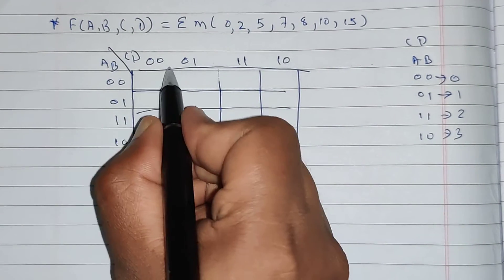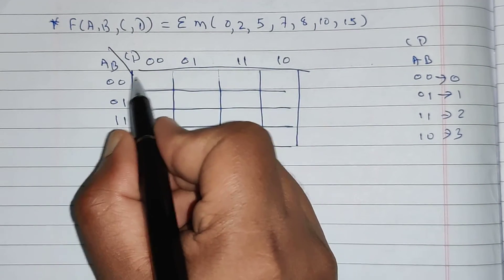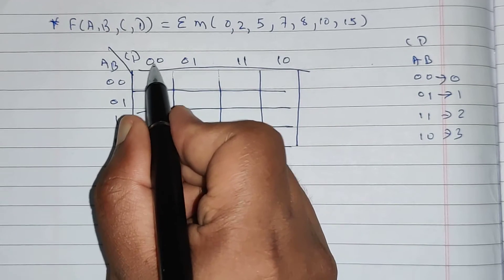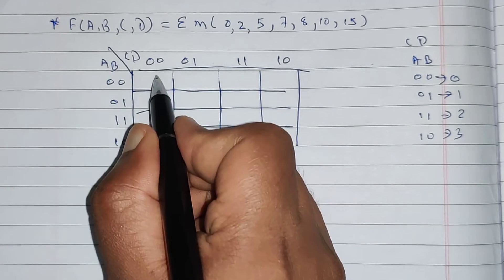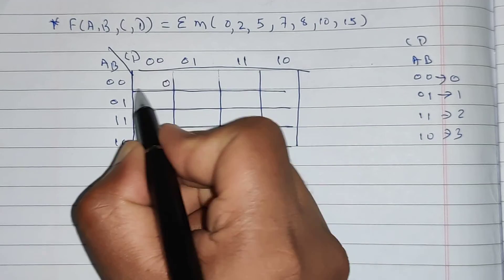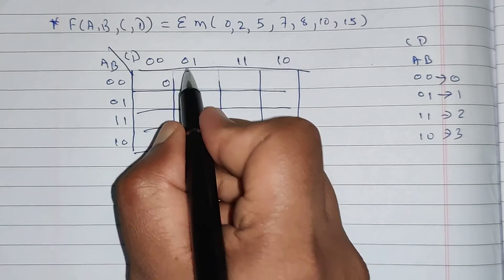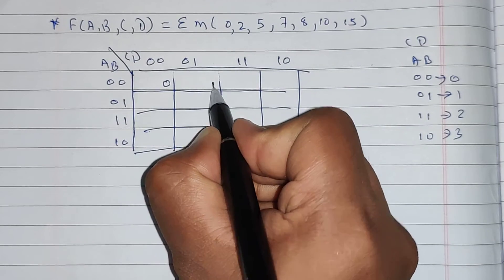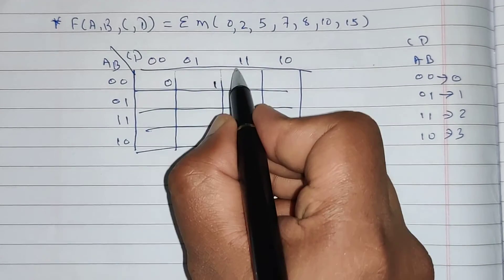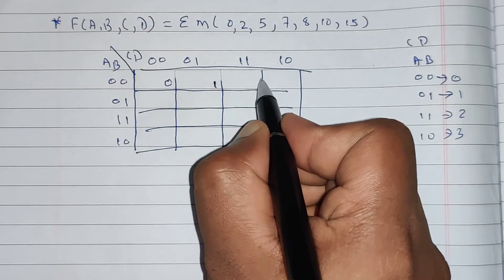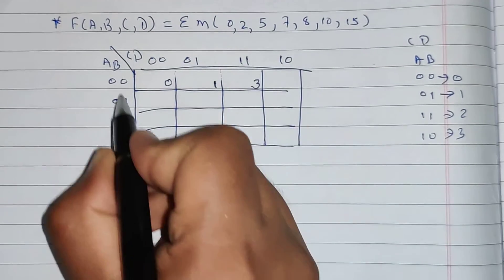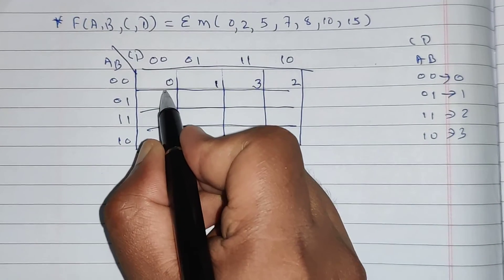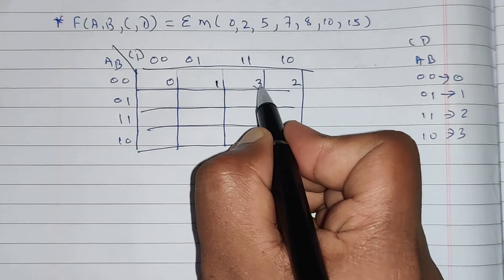Each empty box is called a cell. For this cell, a, b is 0, 0 and c, d is 0, 0, so the minterm is 0. The next cell has value 0,0,0,1 which is 1. Then 0,0,1,1 is 3, and 0,0,1,0 is 2. So the pattern in the first row is 0, 1, 2, 3.